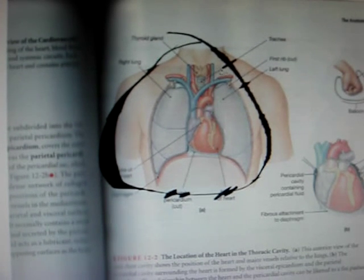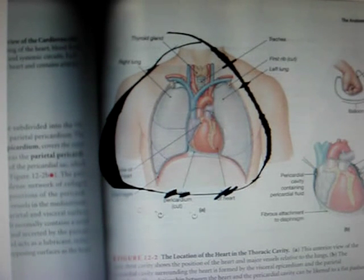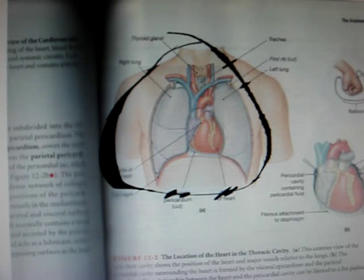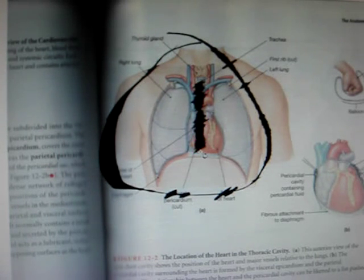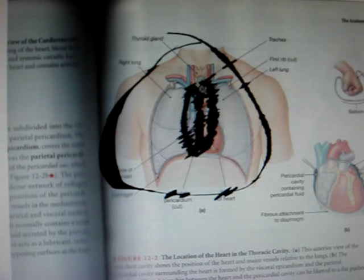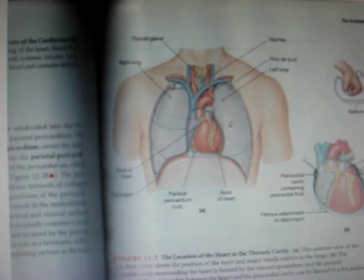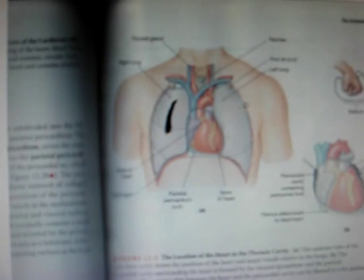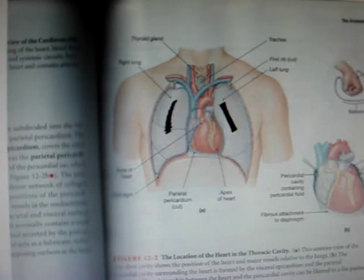Okay, time for the general anatomy of the heart. This is the thoracic cavity. Right here is where the sternum would be. So the area of the mediastinum is right here, and your two pleural cavities are right here.